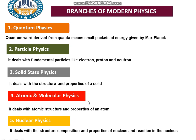The fifth branch is nuclear physics. It deals with the structure, composition, and properties of the nucleus. While atomic physics deals with the whole atom including electrons, nuclear physics is purely related to the nucleus of an atom — its structure, properties, and the reactions that occur inside the nucleus.